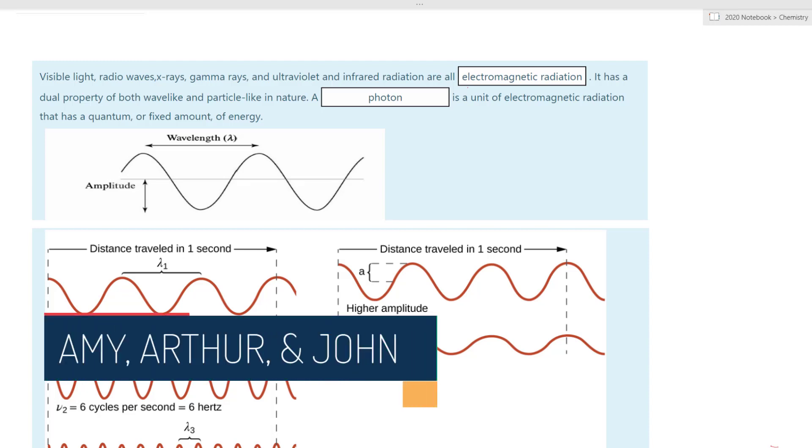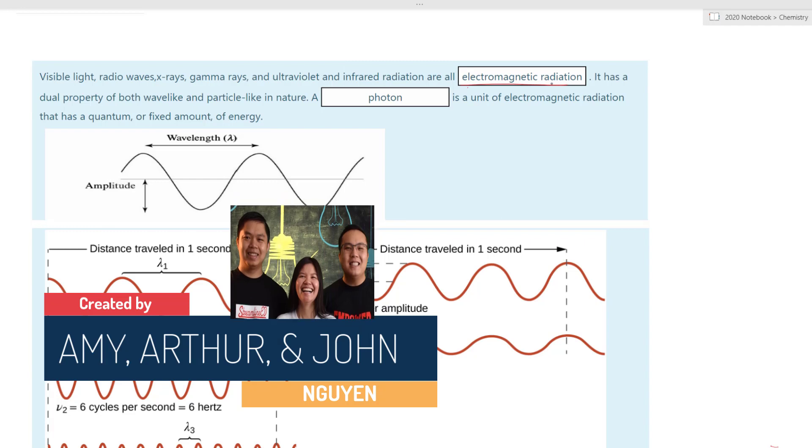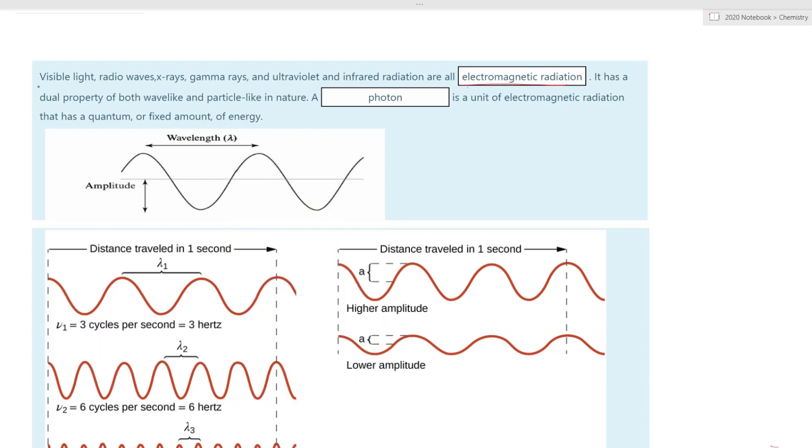Welcome back to another exciting chemistry lesson. In this lesson we are going to look at electromagnetic radiation. Now you have heard of visible light, the light that allows us to see with our naked eyes, and then we have radio waves, x-ray, gamma rays, ultraviolet, and infrared radiation.